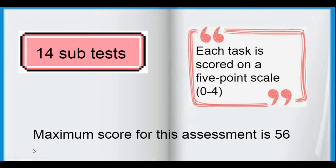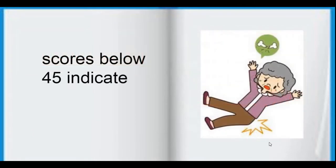Berg Balance Scale is a test used to identify persons who are at risk for fall. It has 14 subtasks, and each task is scored from 0 to 4 depending upon the performance of the patient. The maximum score for all 14 subtasks is 56. If a patient scores less than 45, it indicates an increased risk of fall.